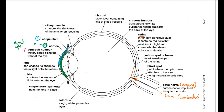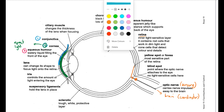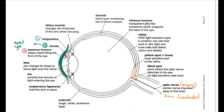The next layer that light passes through is the aqueous humor, which is the fluid at the front of the eye. It's called aqueous because it's a water-like fluid. It helps maintain the shape of the front of the eye — the eye bulges out slightly because the aqueous humor pushes the cornea outward, which helps refract light.